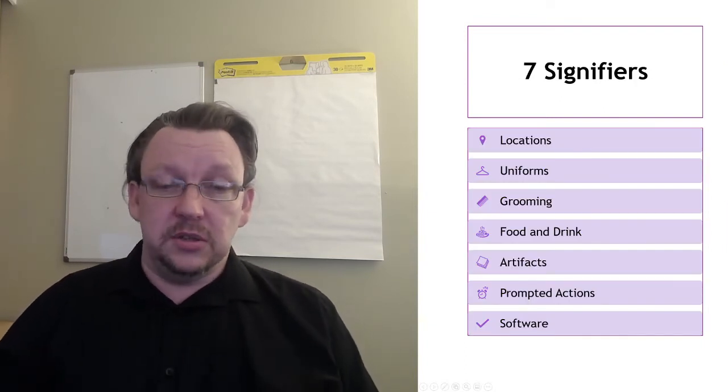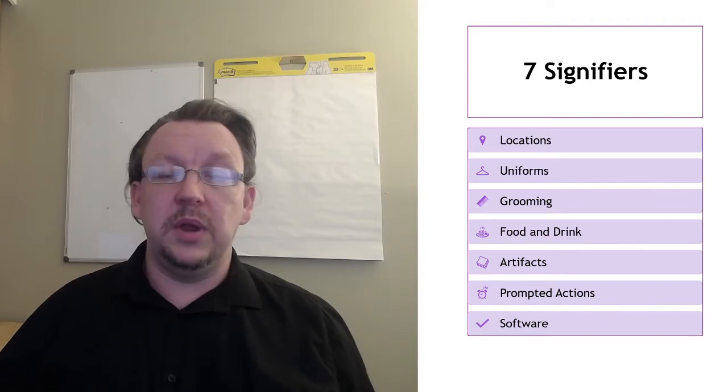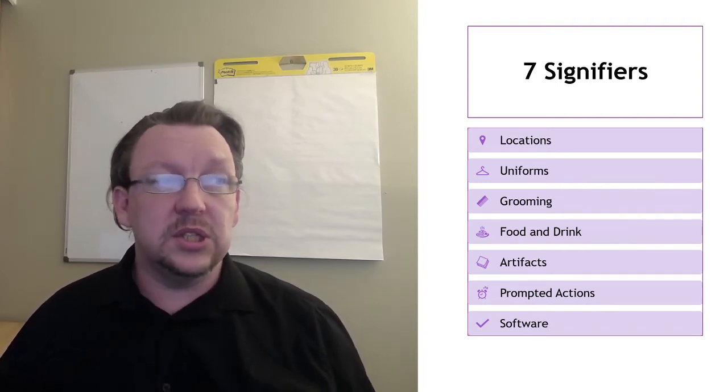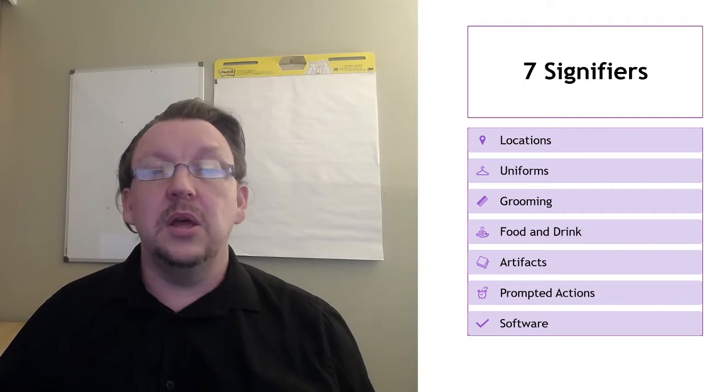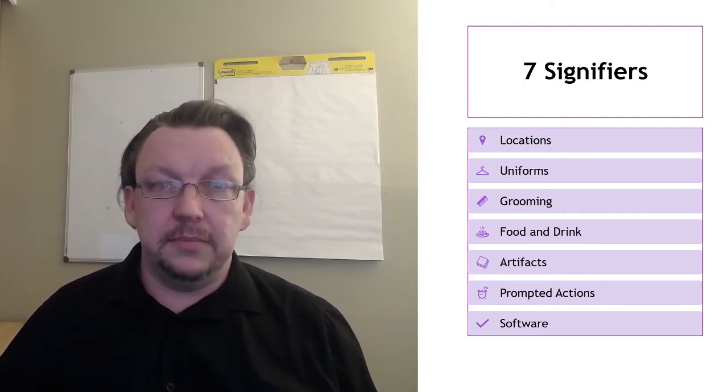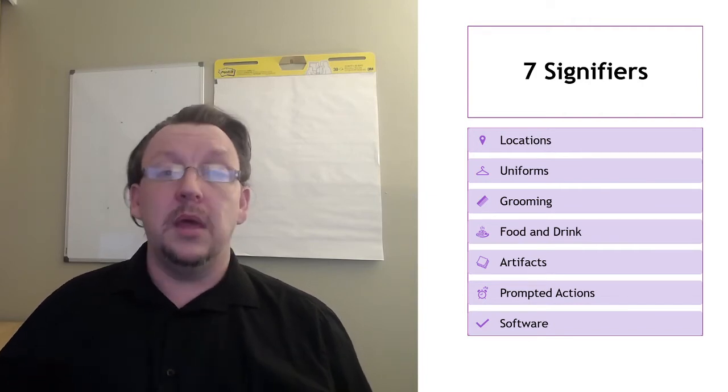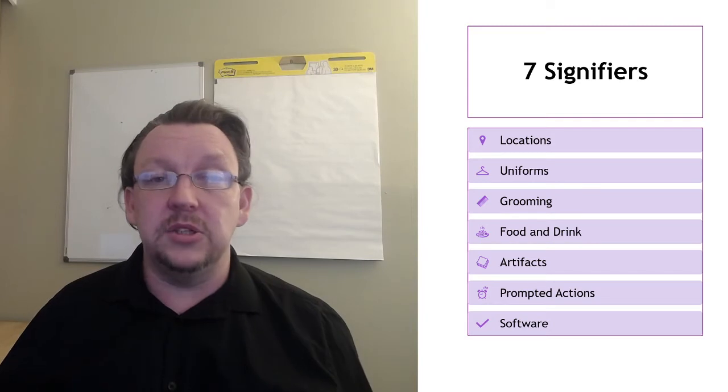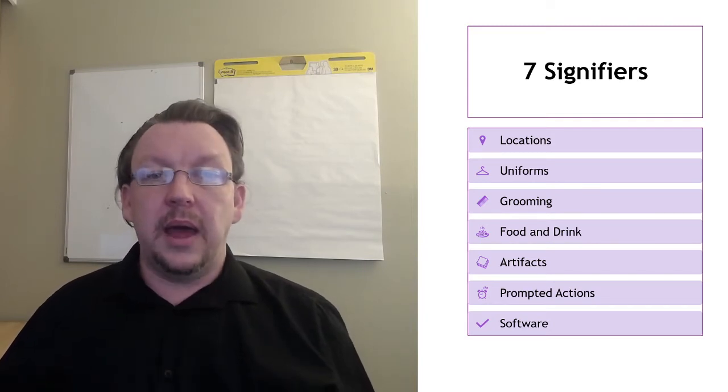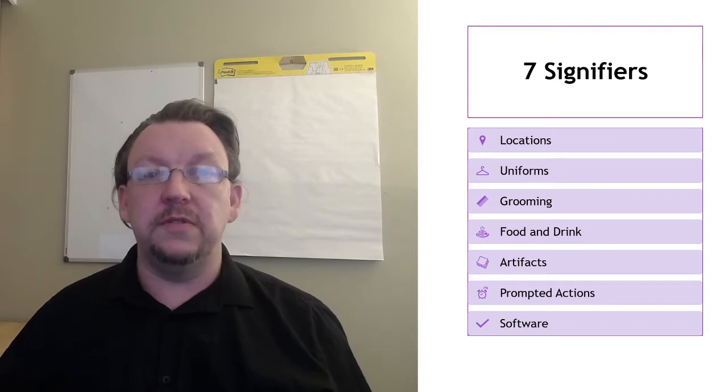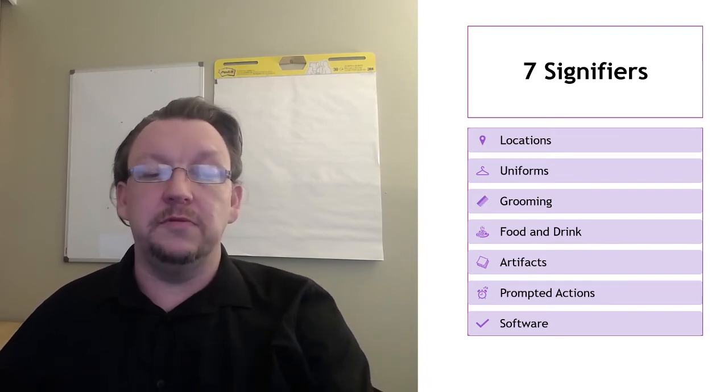In discussion with my students across the semester, we identified seven signifiers. Seven steps that could be undertaken to showcase I'm at uni now. Now you don't have to use all seven, but you may find drawing on parts and pieces from each helps you both as staff or as student find that mindset of I'm at uni, I'm doing university now.